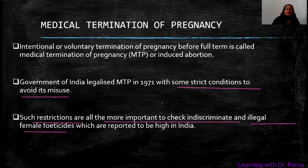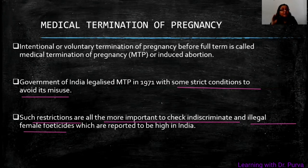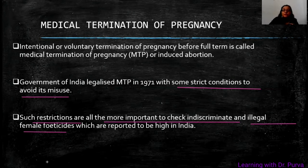Female feticide means that after sex determination, if we know that the baby is not a male child but a female, then in that case female feticide occurs. In society, this results in the sex ratio being reduced — the female count is reduced. So MTP is misused and cases of female feticide increase. This is why MTP has been legalized with some restrictions.